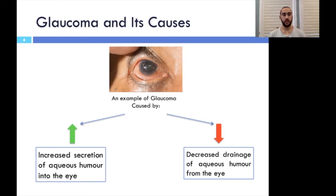However, when cells in the organ begin to behave in faulty manners, it can create problems. One such condition is the physiological disease known as glaucoma. Glaucoma is characterized by increased intraocular pressure within the eye resulting from various causes. Most commonly, the disorder stems from two possible causes. One is the overproduction and secretion of aqueous humor by the ciliary process, where the rate of secretion is greater than the rate of drainage. The second cause is the blockage of outflow or drainage channels, resulting in a build-up of aqueous humor and raising intraocular pressure to harmful levels.